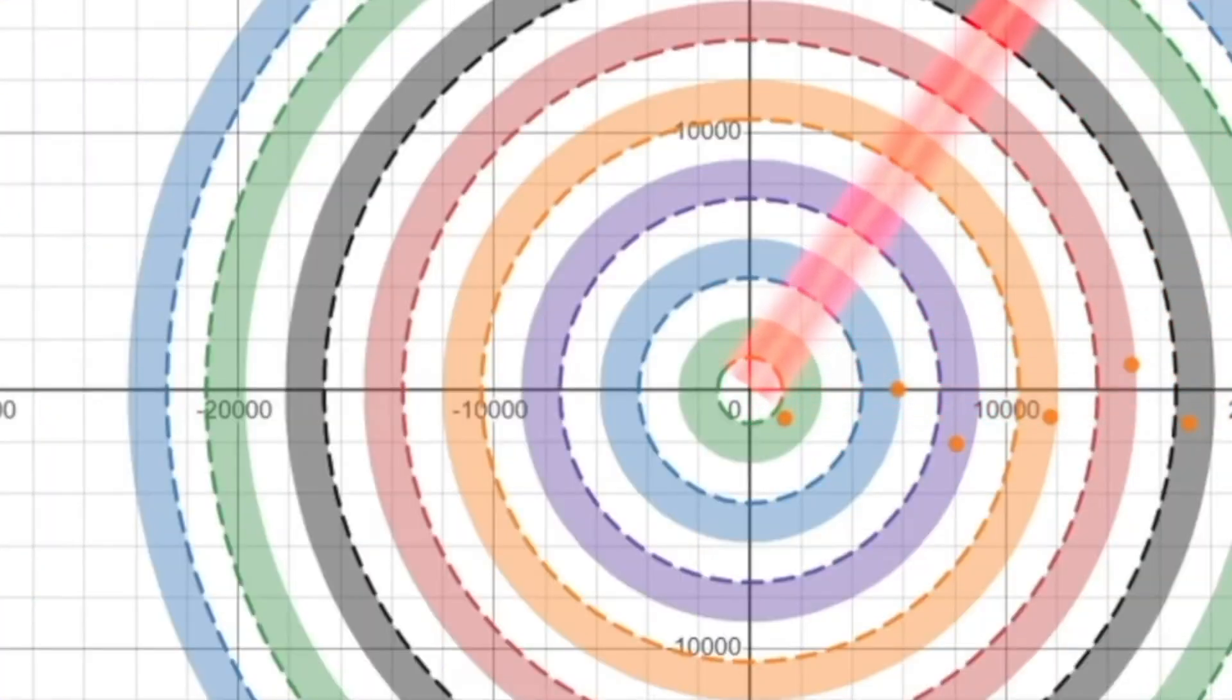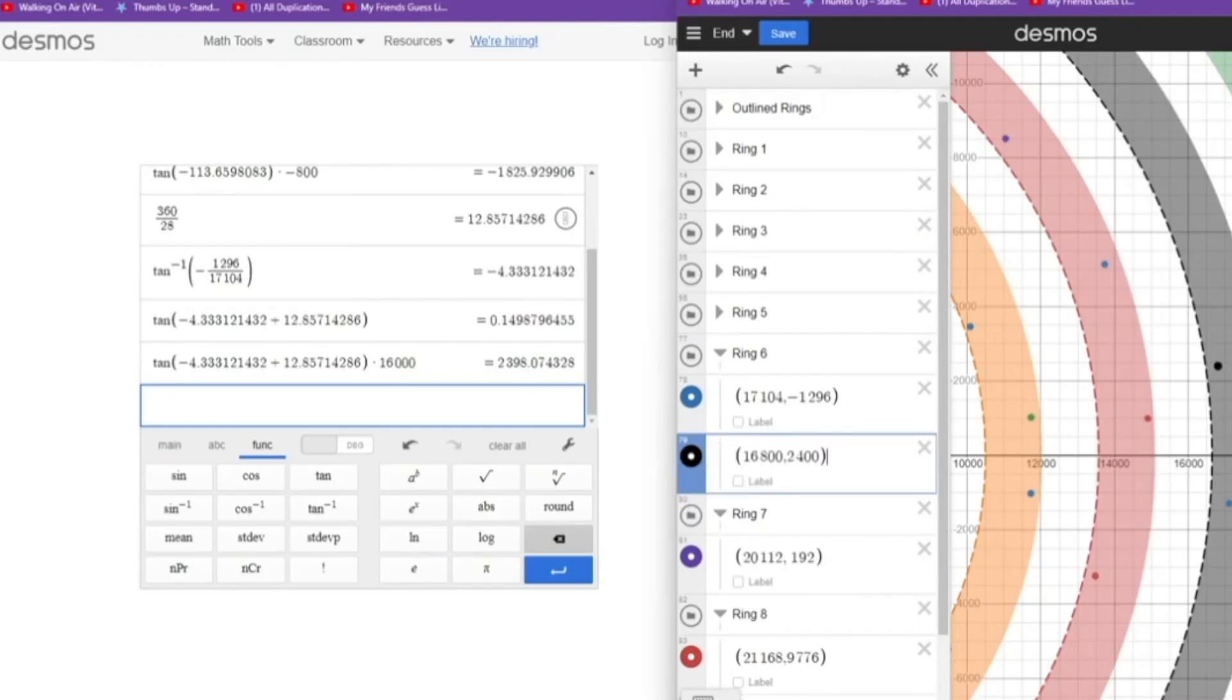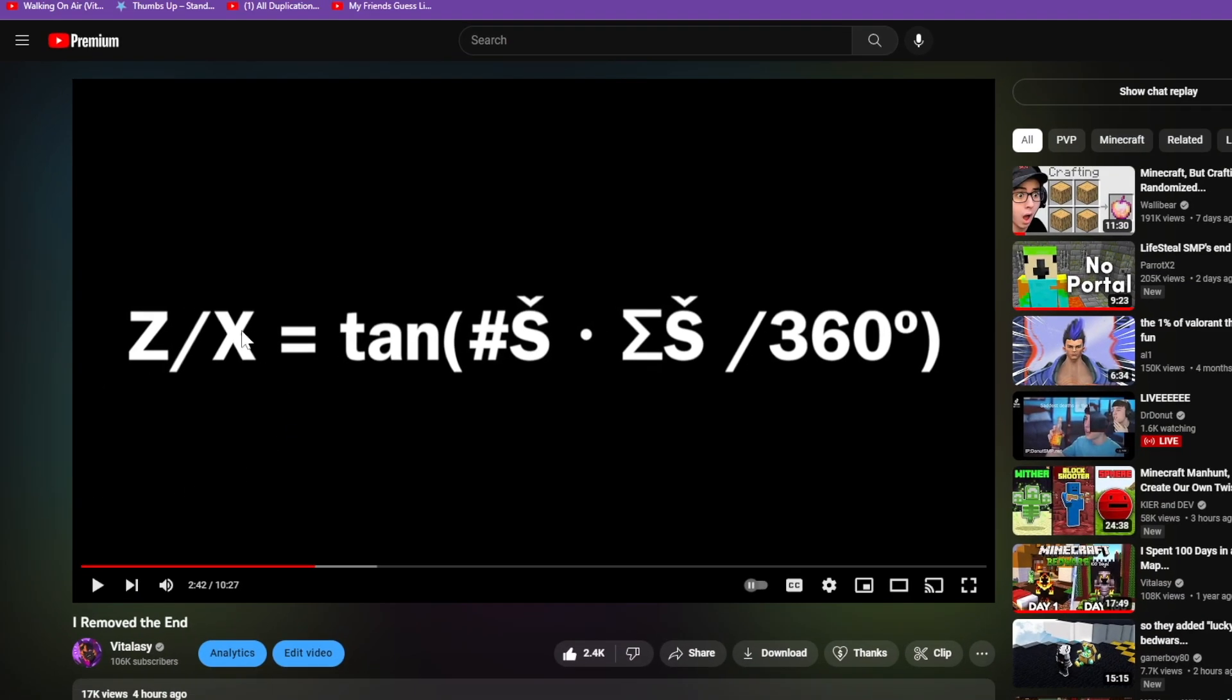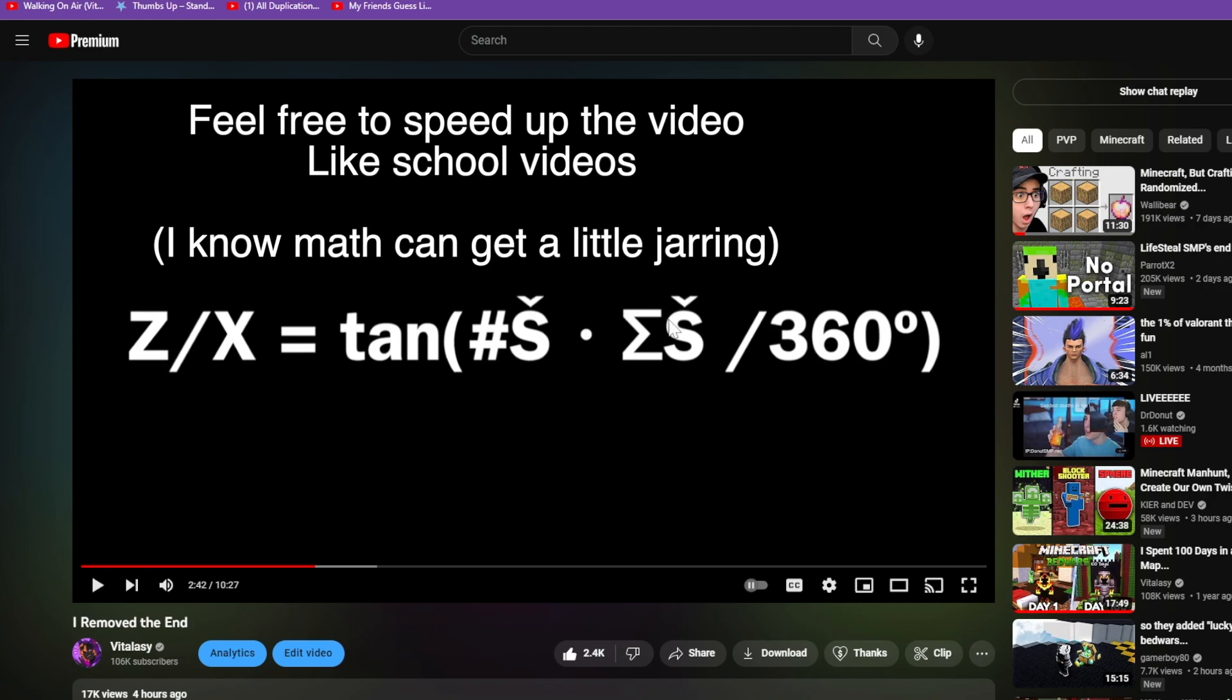One stronghold on each ring around the circle at certain angles. Introducing the formula: Z/X equals tan of number S times mu S over 360 degrees. This will all make sense later.